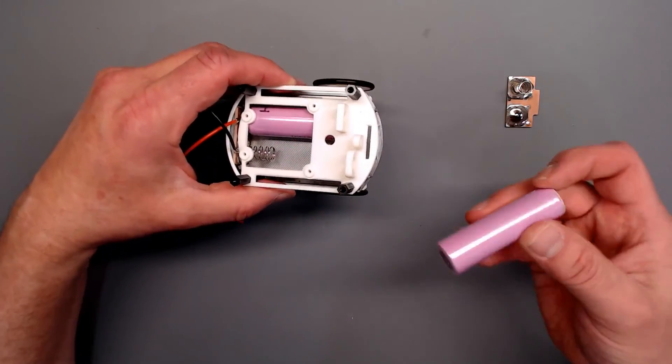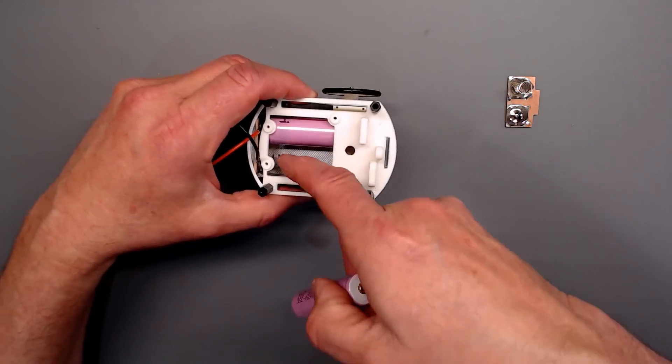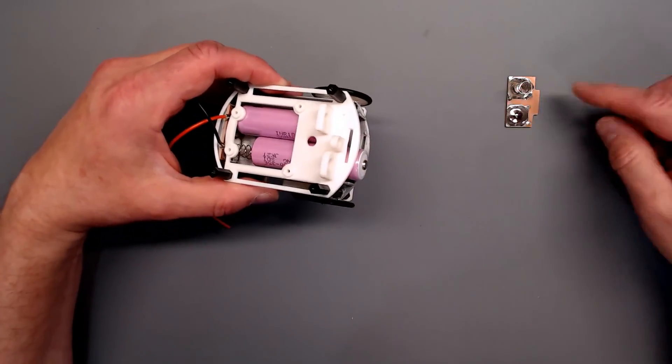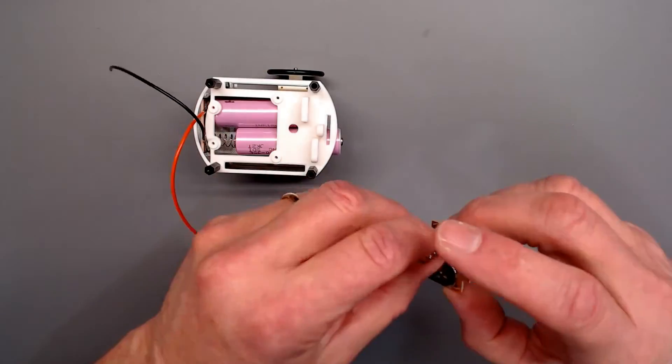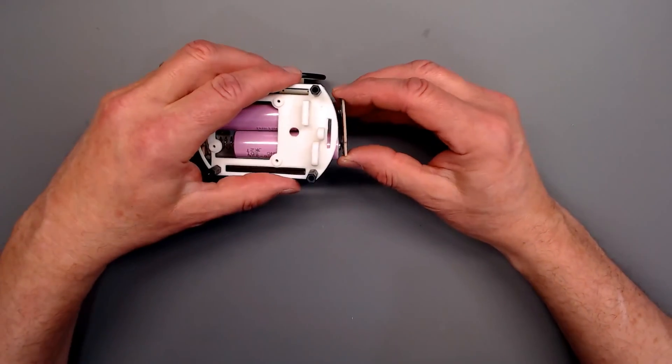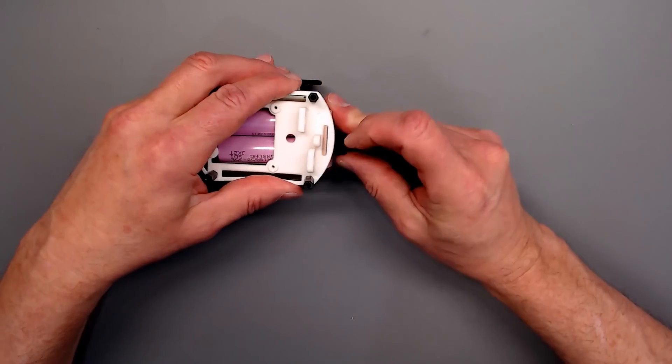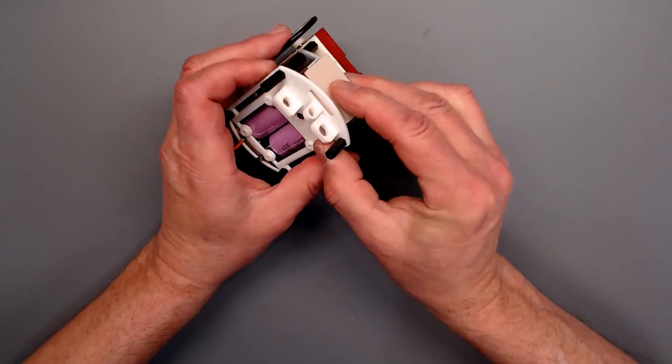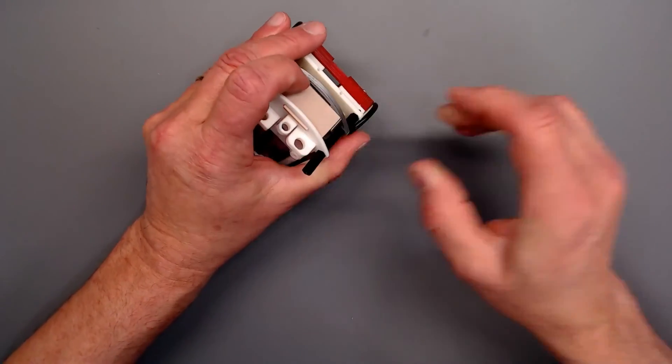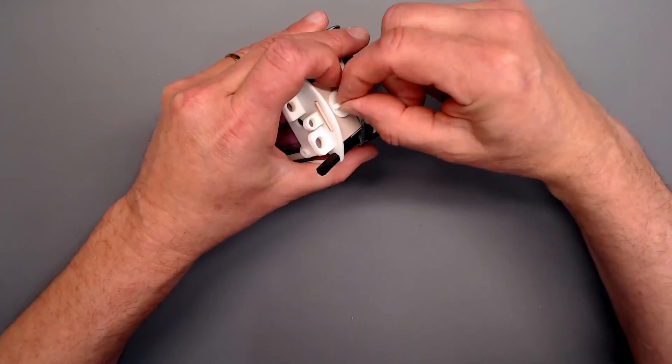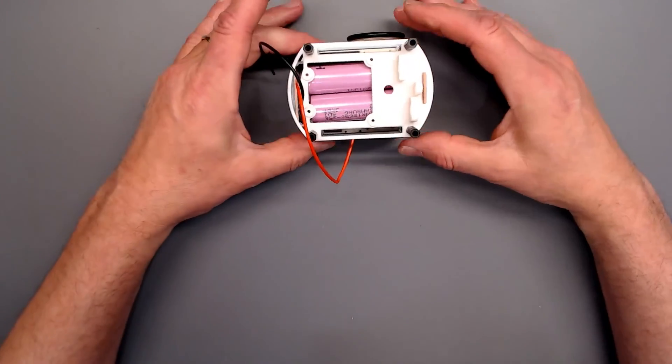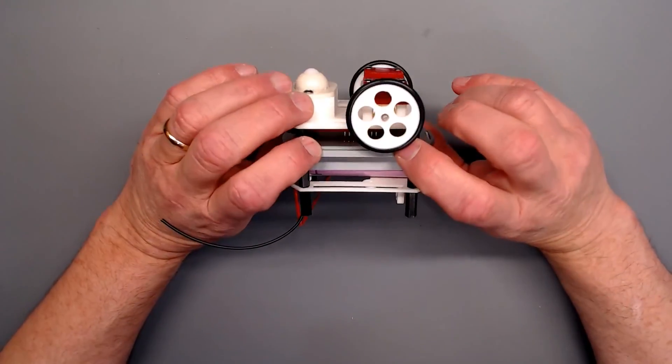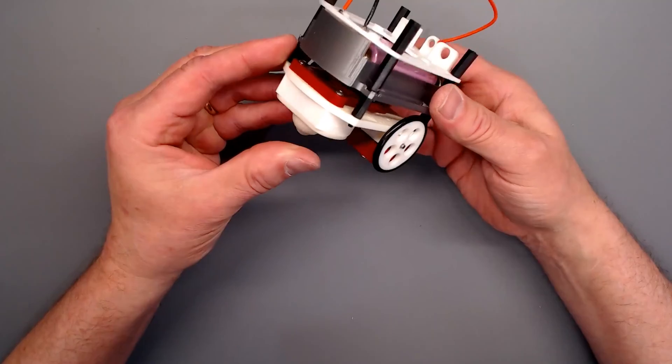I'm going to slide that cell in, negative side toward the spring. Got the spring, we've got negative, positive. So, we will reach in here, push that forward like so, and we will slide in our little clip and now we have our battery deck completed.